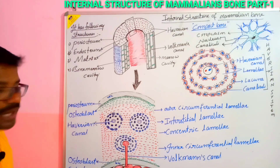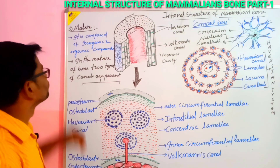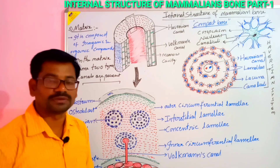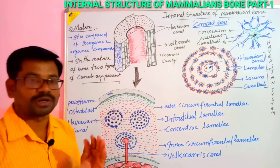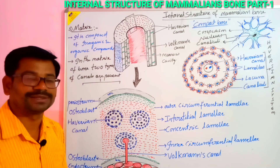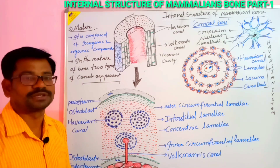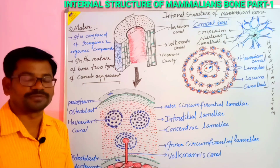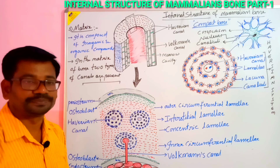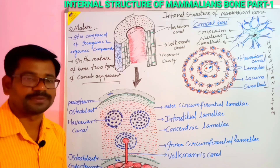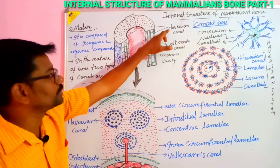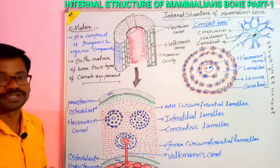The third part is the matrix. The matrix is composed of inorganic and organic compounds. The inorganic compounds are mainly salts — calcium phosphate, calcium carbonate, and calcium bicarbonate. Calcium phosphate is present in the form of hydroxyapatite, which is the major inorganic compound in bone matrix. The organic compounds include collagen fibers, which are made up of type 1 collagen protein. In the matrix, two types of canals are present.